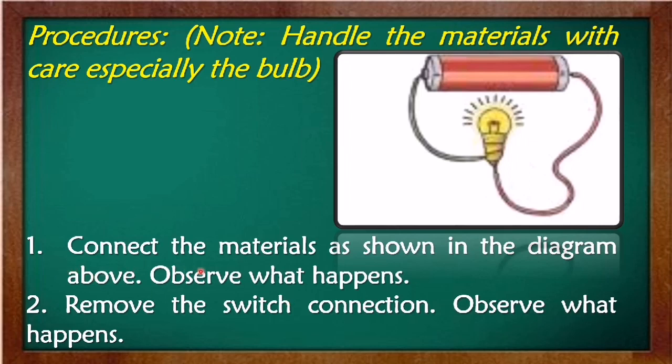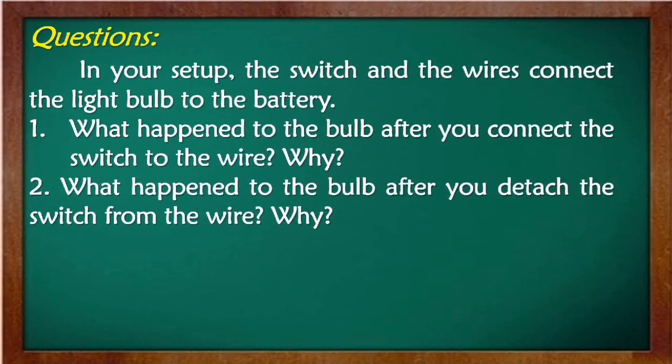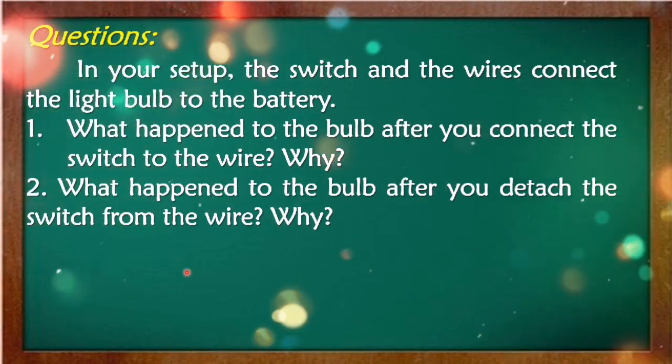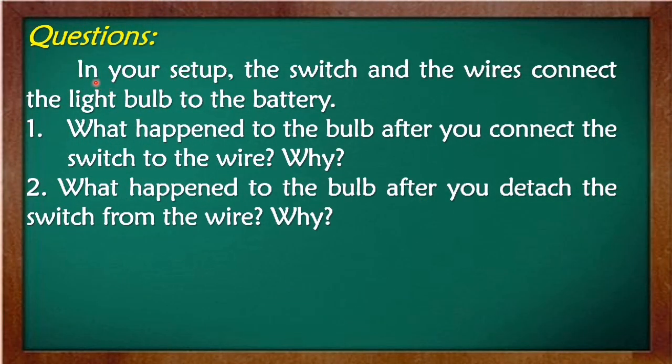Number one. Connect the materials as shown in the diagram above. Observe what happens. Remove the switch connection. Observe what happens. And after performing your activity, we have questions that you have to answer. In your setup, the switch and the wires connect the light bulb to the battery. Number one question: What happened to the bulb after you connect the switch to the wire? And why? Number two: What happened to the bulb after you detach the switch from the wire? And why?